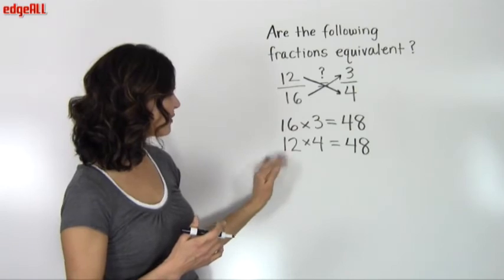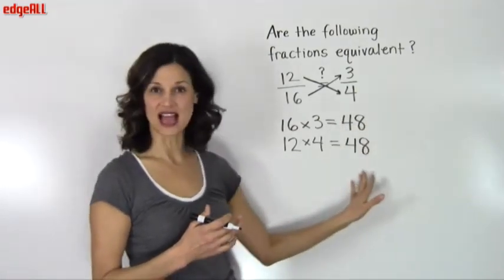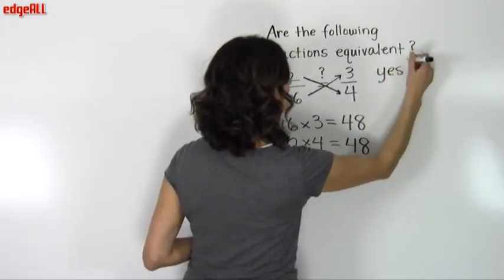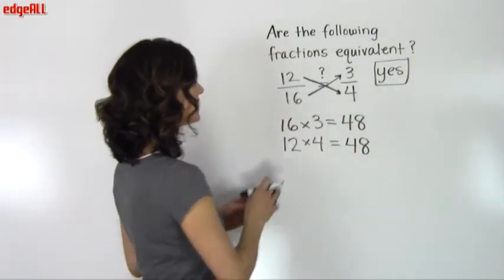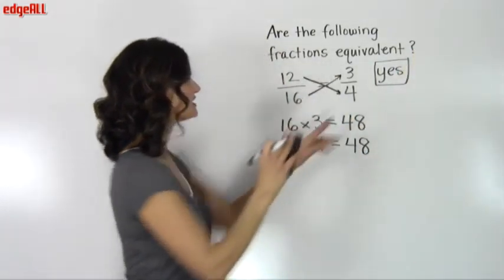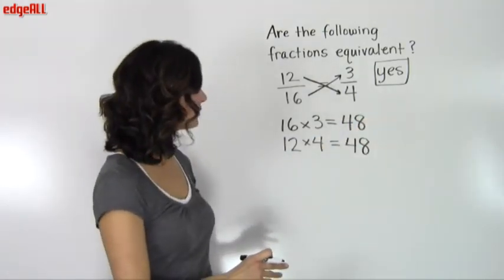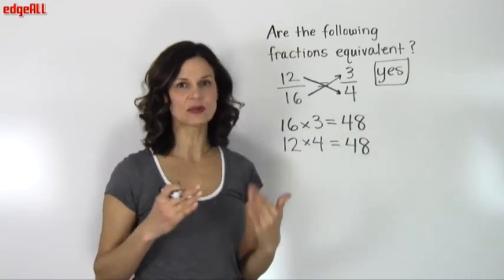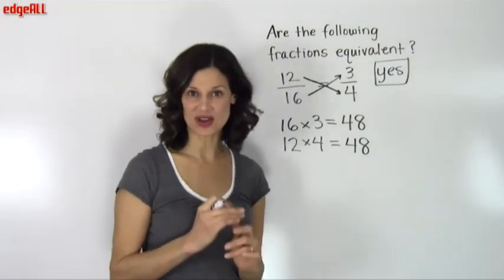And sure enough, we have 16 times 3 equals 48 and 12 times 4 equals 48. So yes, in this case, these two fractions, 12 sixteenths and 3 fourths, are equivalent fractions. So our answer to the problem is yes. And you simply need to remember that if the cross products are equal, the fractions are equivalent.